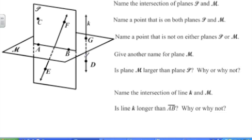Okay, so let's go on to the next one. Name the intersection of planes P and M. Okay, well, planes intersect at a line. So where do these two planes intersect? Well, right there. Right there at AB, the line AB.